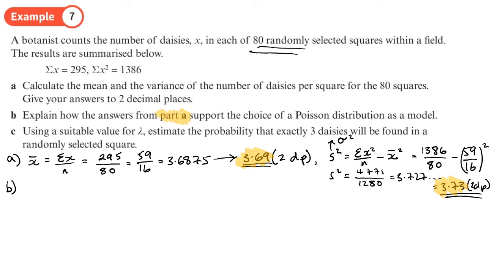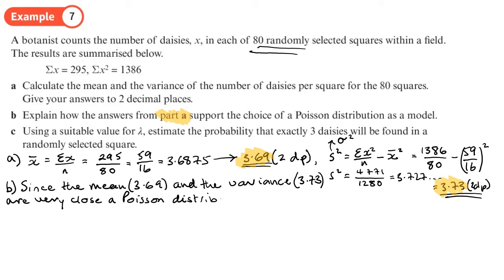So I'd write down something like: since the mean, which is 3.69, and the variance, which is 3.73, are very close, a Poisson distribution is a suitable model. Yeah, because of what we know about a Poisson distribution and the fact that the mean and the variance are equal to the rate at which things happen.